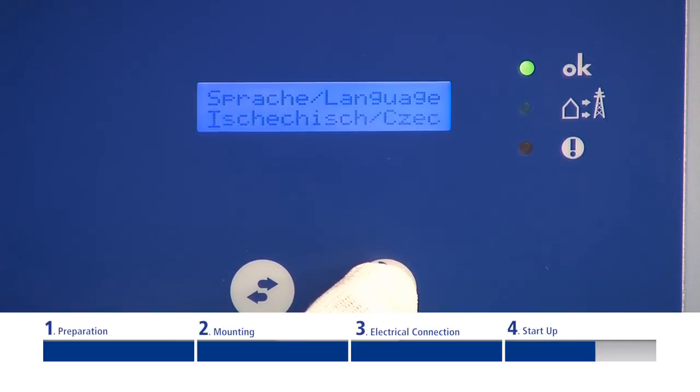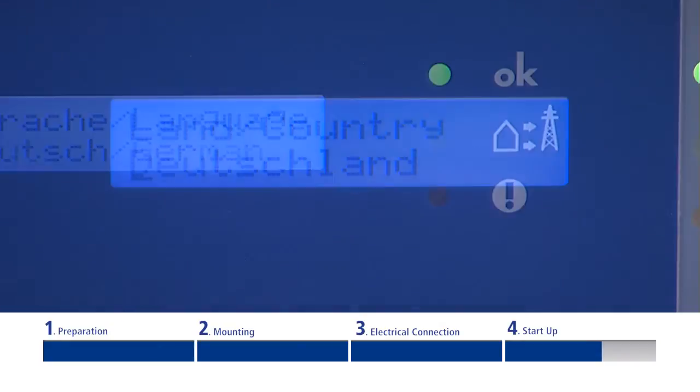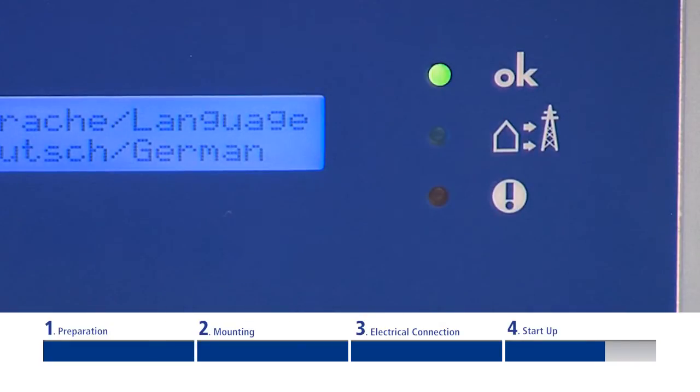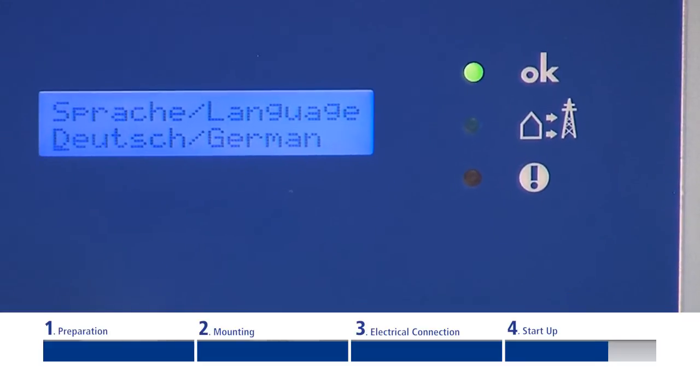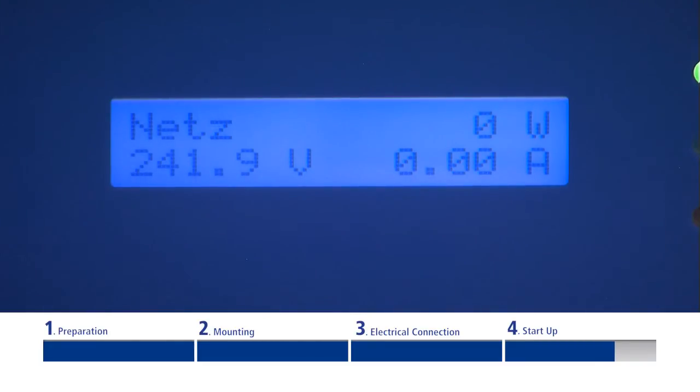During the initial startup, the appropriate country and language must be selected. The top LED diode lights up when in non-grid feed mode and indicates that it is ready to be put into operation. The display now indicates the current generator voltage.